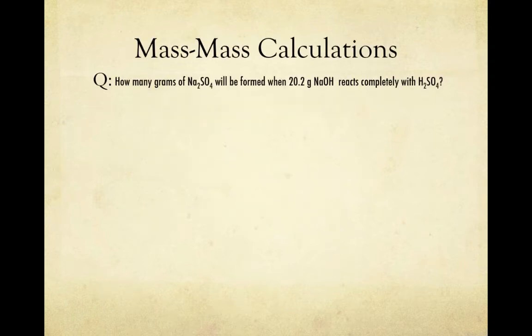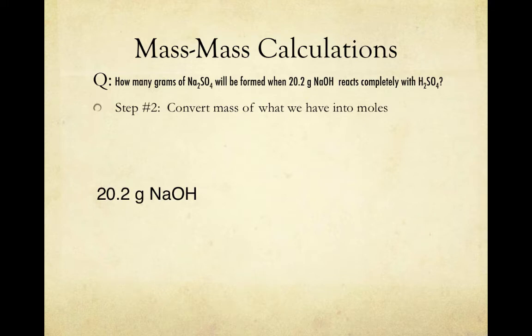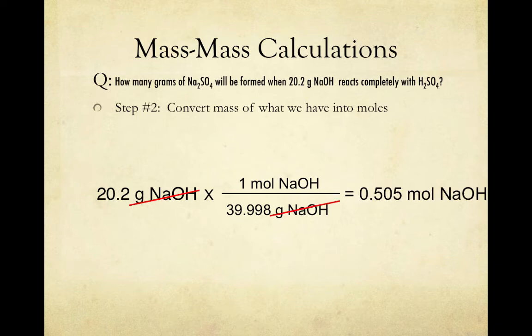From here, in order to use the mole ratio, we have to convert what we're given from grams into moles. Using mole conversions, which we learned previously, we know that we can multiply what we're given, 20.2 grams, by a conversion factor of 1 mole of NaOH over the molar mass of NaOH, which is about 40. Alternatively, you can simply divide 20.2 by the molar mass. Canceling our units, we find that we have 0.505 moles of sodium hydroxide.